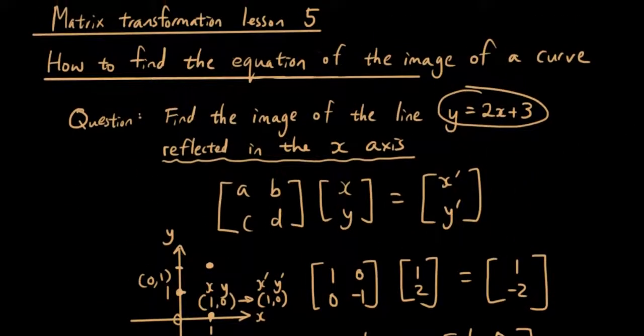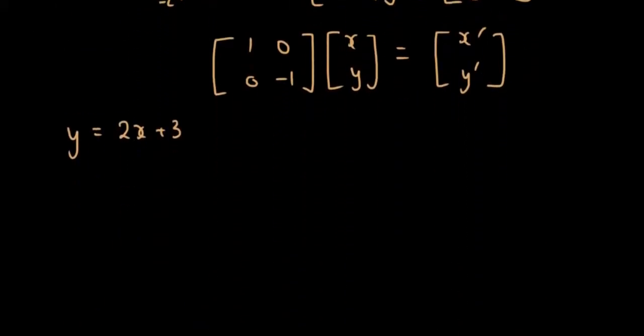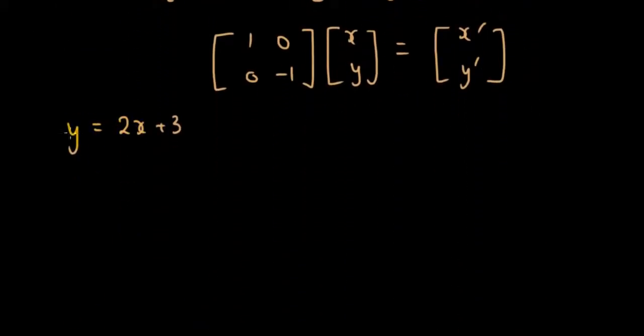That is our original equation that relates x and y together. So if we're given x, we can find y, and if we're given y, we can find x. And now what's happening is we want to know what y dash is in terms of x dash. What do I put in front of x dash and after x dash so that I can get y dash.